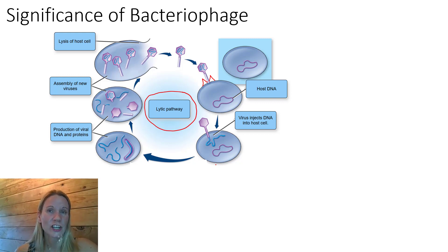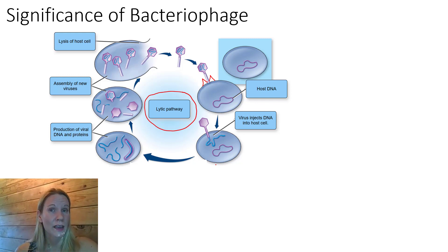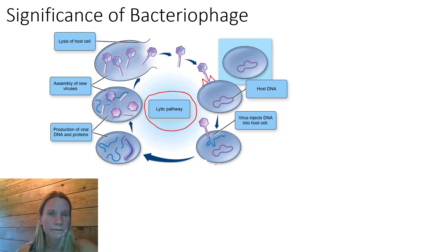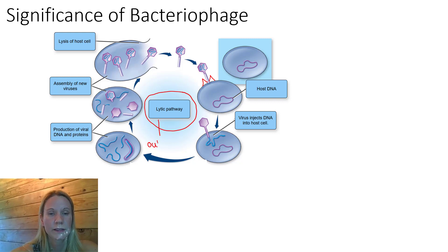Remember, it's like hijacking the cell. It's telling the cell: we're not going to make cell proteins anymore - we're going to make viral proteins. I am in charge, says the virus. And it takes charge and converts the cell into a viral cloning factory, so that we can get hundreds, even thousands of new viral progeny released from a single infected cell. Here it's showing us that in the process of release, this causes the cell to lyse or break open. That's why this cycle is called the lytic pathway - the word lytic means to break. So the outcome of this pathway is cell death, or lysis.